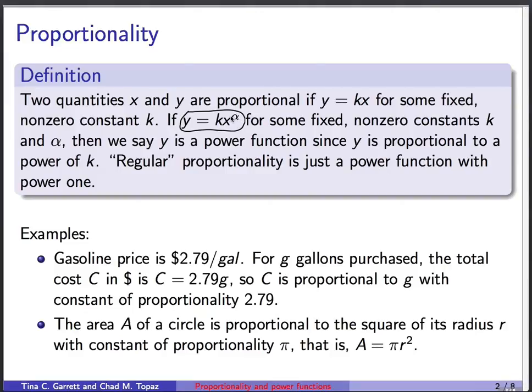So here are two simple examples. Gasoline is $2.79 a gallon. If you purchase g gallons, the cost c is 2.79 times g. So c is proportional to g with constant of proportionality 2.79.